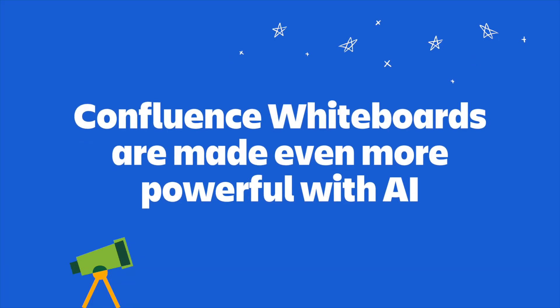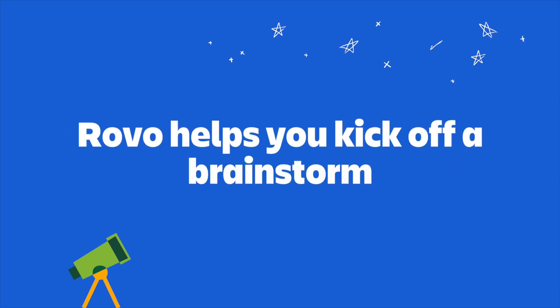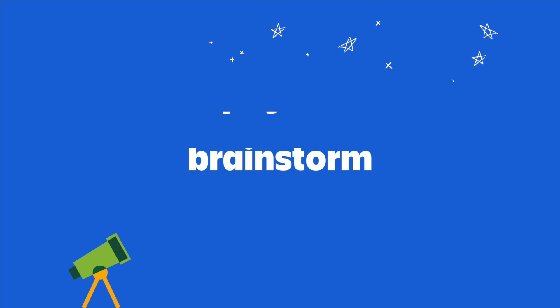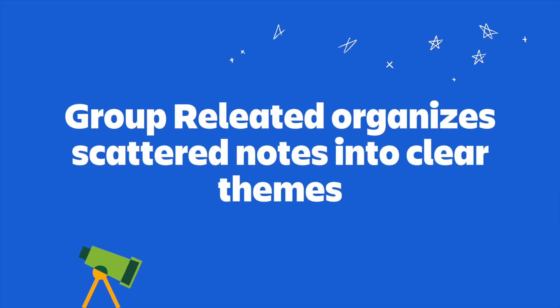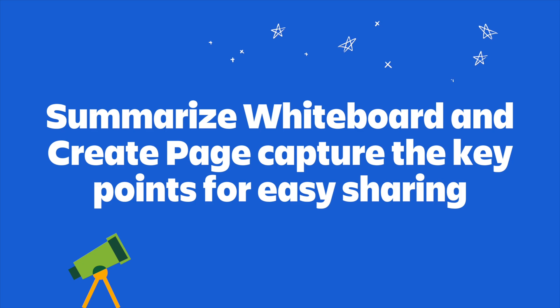I know that was a lot of information, so let me give you a quick recap. Confluence whiteboards are made even more powerful with AI, giving teams tools to start faster, stay organized, and move ideas into action. Rovo helps you kick off a brainstorm. Group Related organizes scattered notes into clear themes. And Summarize Whiteboard and Create Page capture the key points for easy sharing.